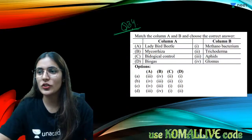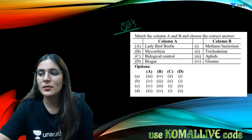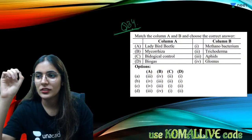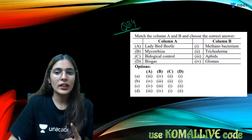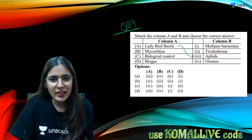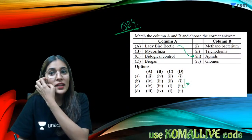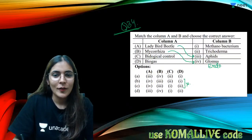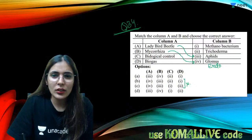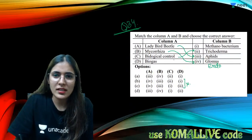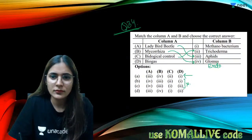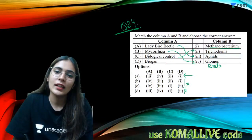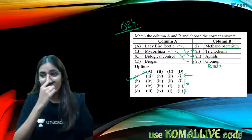Question thirty-four: correct option — ladybird controls aphids (not mosquitoes). Glomus is an endomycorrhiza. Trichoderma is a biological control agent. Methanobacterium (methanogens) produces methane in biogas production. Matching: ladybird with aphids, Glomus with endomycorrhiza, Trichoderma with biocontrol, methanobacterium with biogas. The answer is option A.